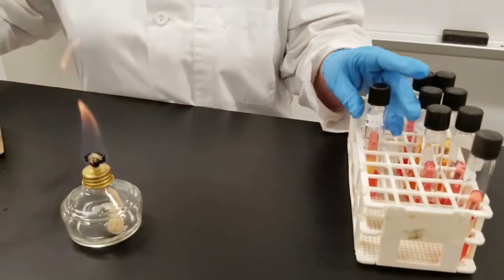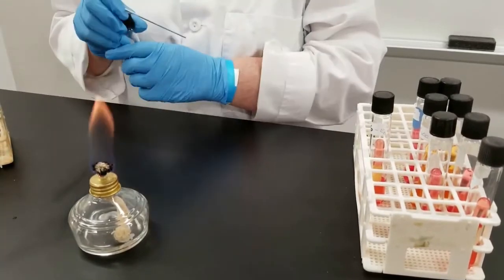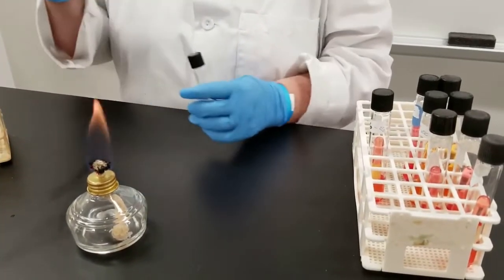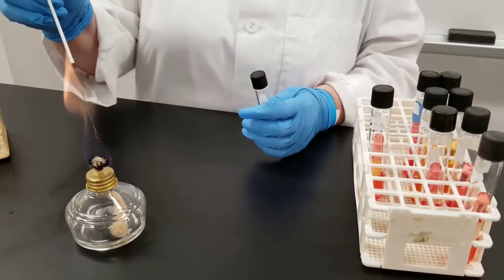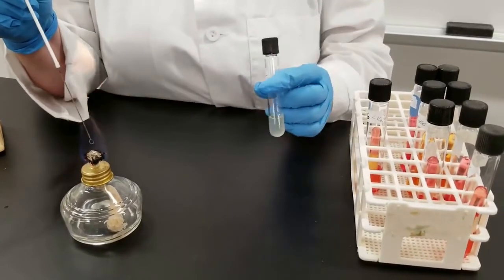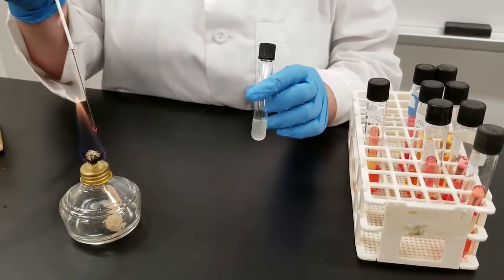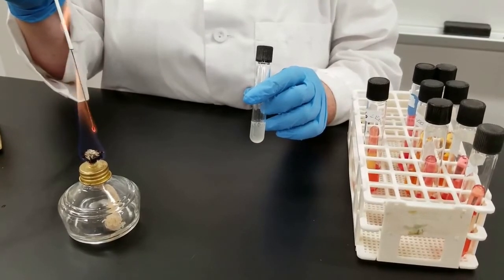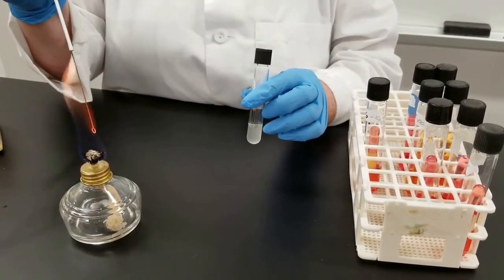To inoculate each of these, we're going to use two different cultures. We will use E. coli and Proteus vulgaris. And so we're going to inoculate. We have the initial culture in a liquid broth and I'm going to go from that liquid broth into each of those tubes.